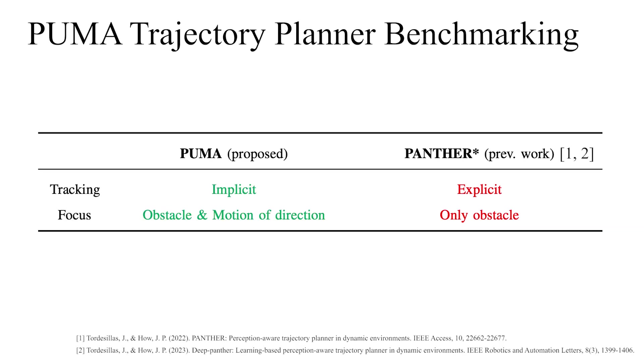Our previous work Panther Star uses explicit tracking, meaning its optimization explicitly states to track obstacles, whereas PUMA uses implicit tracking, resulting in safer unknown space navigation.